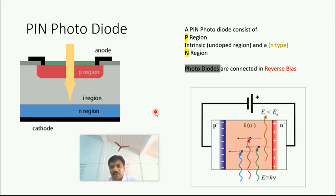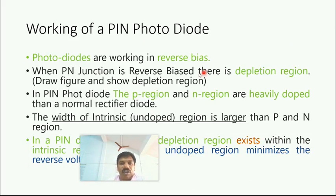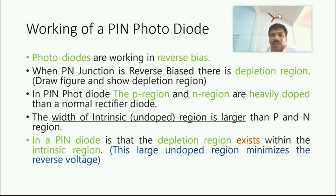This is the working of photodiode. Photodiodes are working in reverse bias, as I mentioned in the previous slide. When PN junction is reverse biased, there is depletion region that you studied from previous classes, previous semester. You can draw a PN junction here - reverse biased region and region. At the middle you can show the depletion region containing immobile carriers. Electron, hole - in a circle you can represent the mobile carriers.